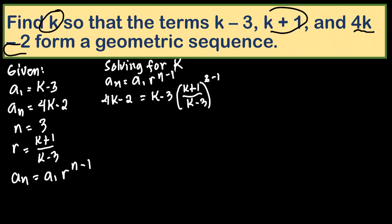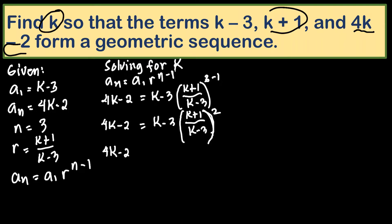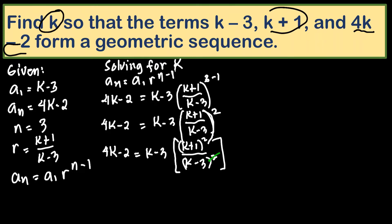Substituting, this gives us 4k-2 = (k-3) · [(k+1)/(k-3)]² raised to 3-1. Simplifying further, this is 4k-2 = (k-3) · (k+1)² / (k-3)². We can cancel one factor of (k-3), giving us 4k-2 = (k+1)² / (k-3).